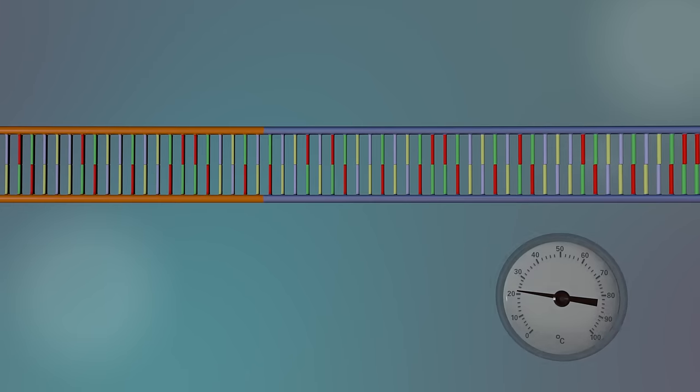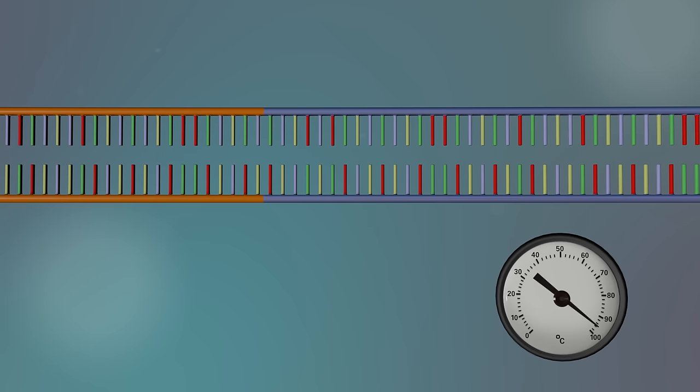To start the sequencing reaction, everything is heated to 96 degrees Celsius. This separates the DNA into two single strands.